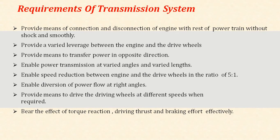The speed reduction ratio is 5 to 1. It enables diversion of power flow at right angles — that is through the differential — which can transfer the power at 90 degrees to the live axle. It provides means to drive the wheels at different speeds when continuously changing requirements arise, and bears the effects of torque reaction, driving thrust, and braking effort effectively.